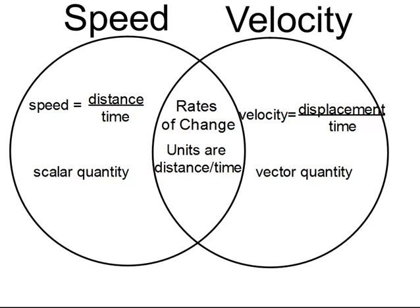Speed is defined as distance over time. So whenever you find the total distance that an object travels, you divide that by the total time it took, and that will give you the object's speed. Speed is a scalar quantity.